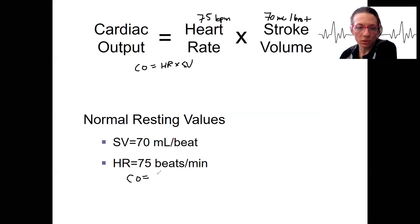Well, cardiac output equals 75 beats per minute times 70 milliliters per beat. We can cross the beats out, and we get 5,250 milliliters per minute, or 5.25 liters per minute.